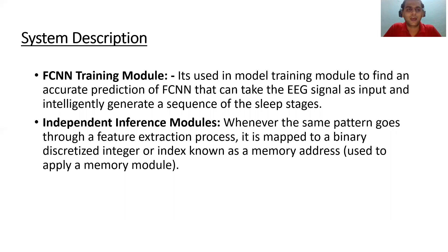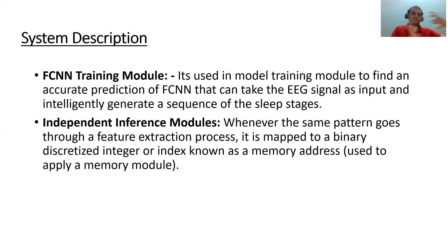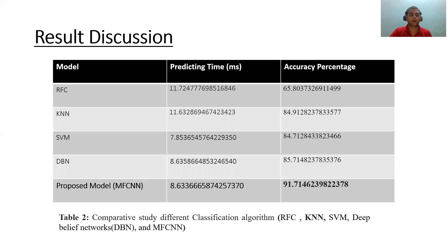The system discussion is divided into two parts: the FCNN training module and the independent inference model. The FCNN training module is used in prediction of accuracy, performing on EEG and ECG signals as input, and intelligently generates a sequence of sleep stages — whether a person is in the first or second cycle of sleep, and so on. The independent inference model maps the same pattern through a feature extraction process, mapping it onto a binary index known as a memory address, stored as a memory unit.